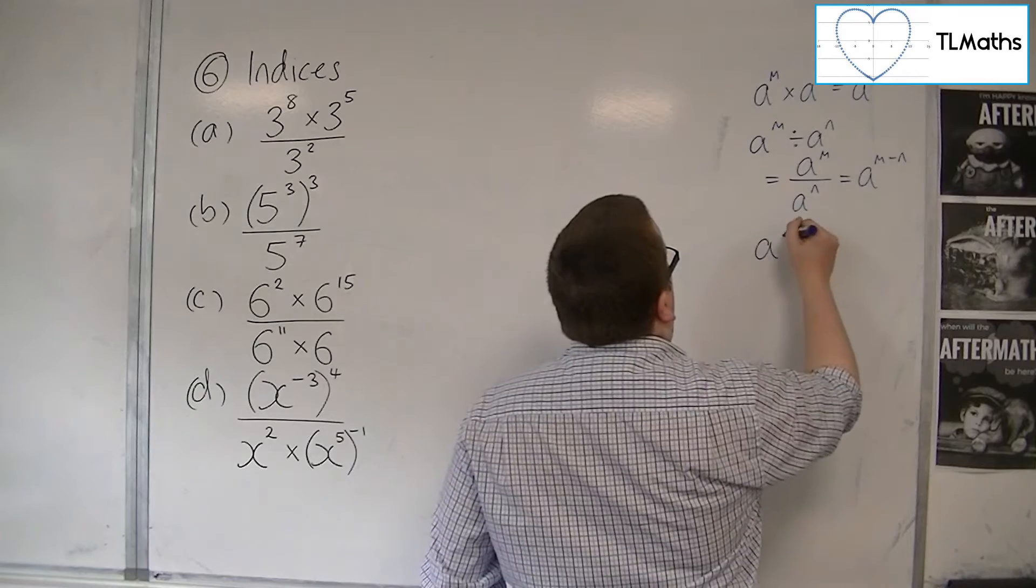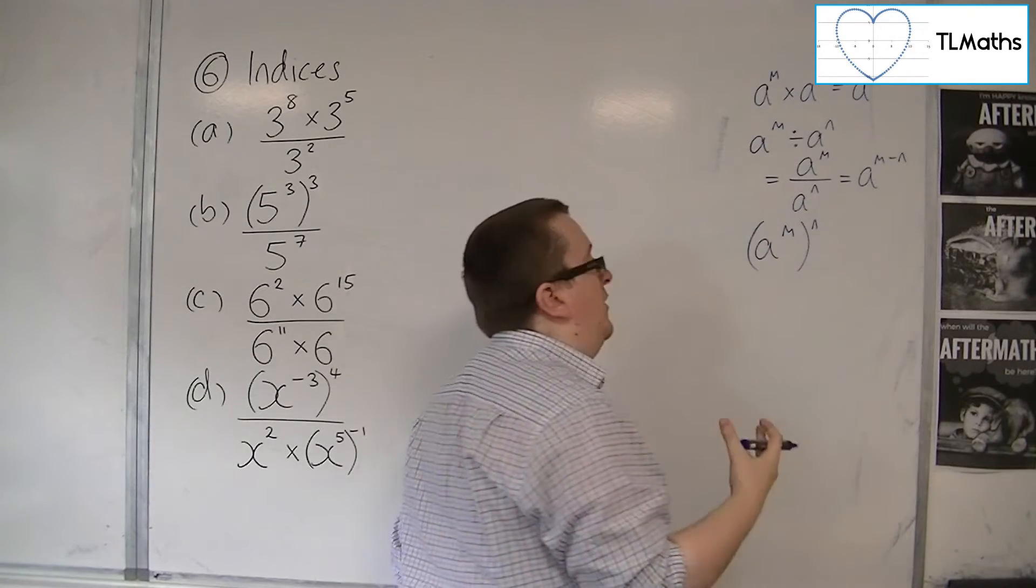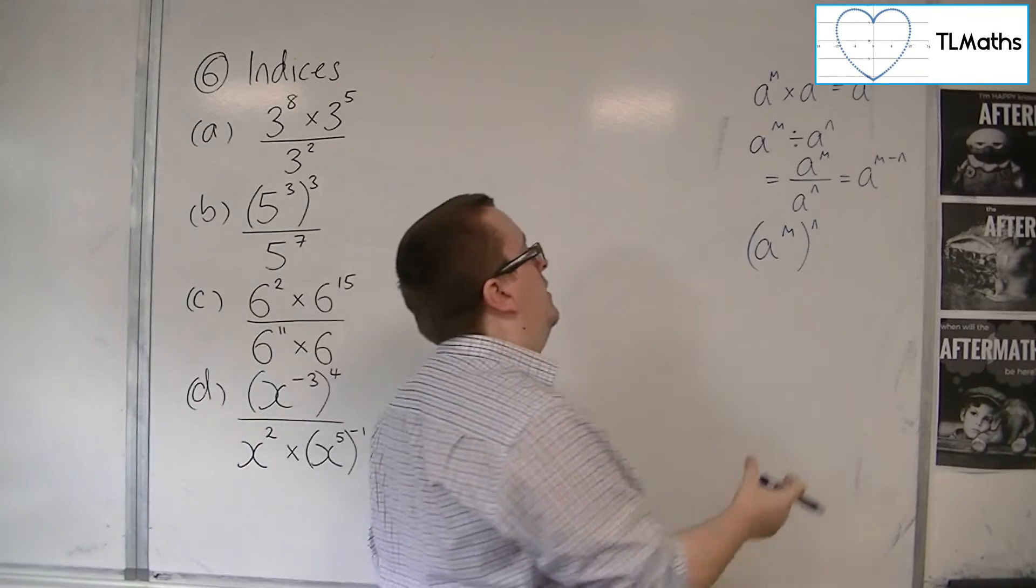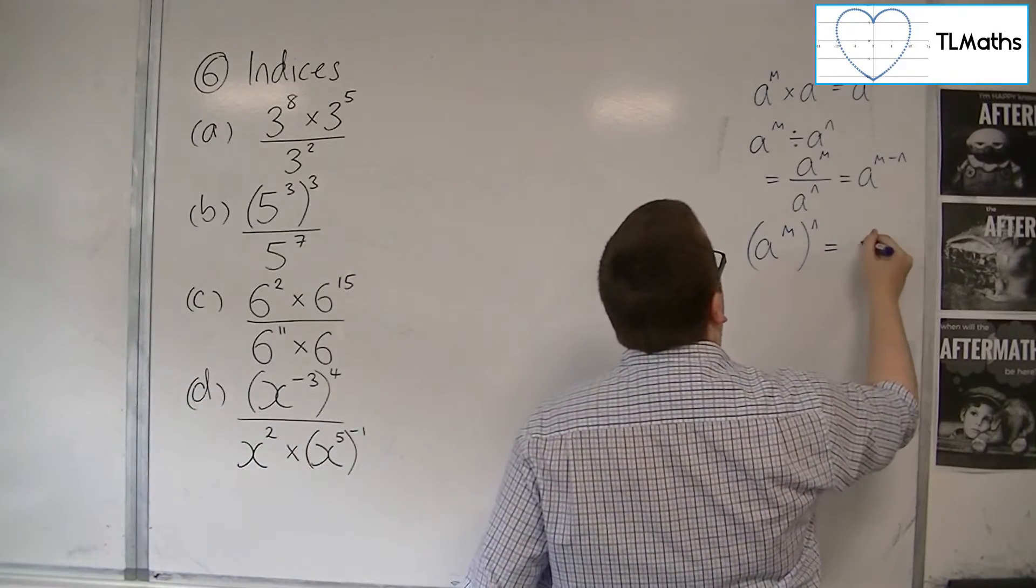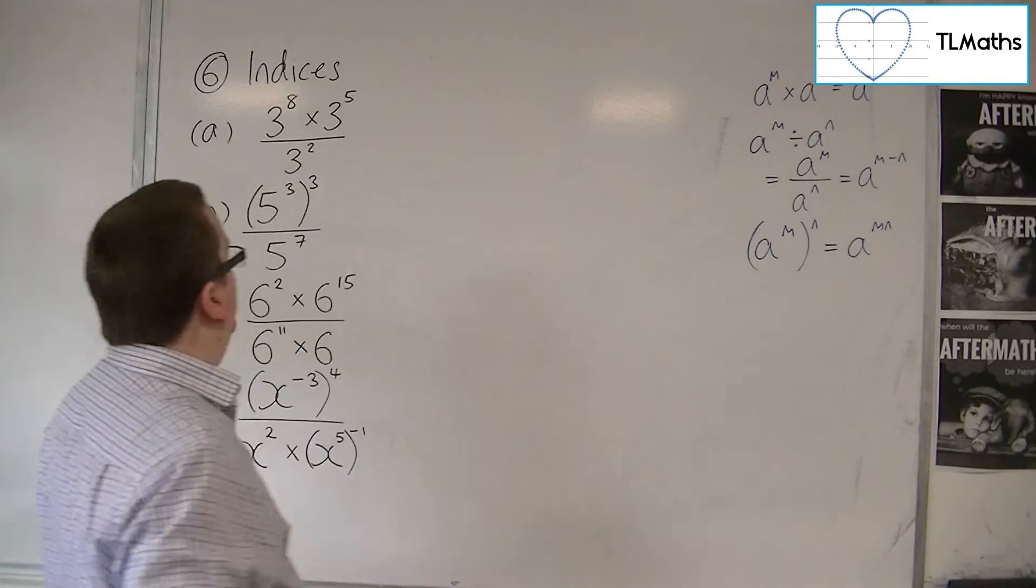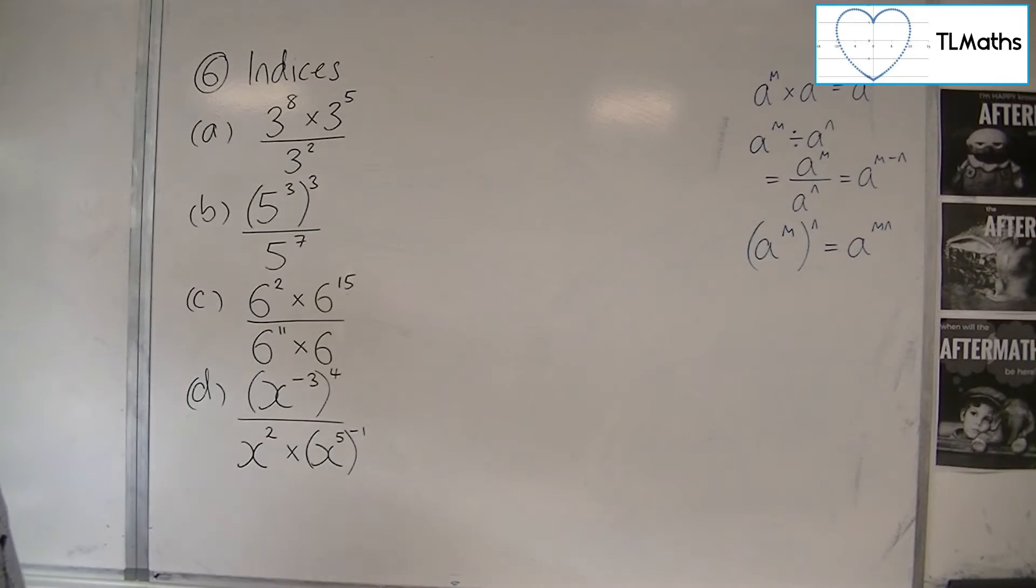If you have (a^m)^n, then in this case, the indices multiply together. I'll show you an example of this in these four problems.